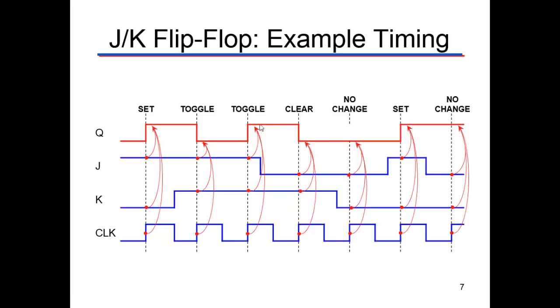When the next rising edge of the clock comes by, you're going to have K is one, J is zero. So that's the clear condition. And Q goes to zero.